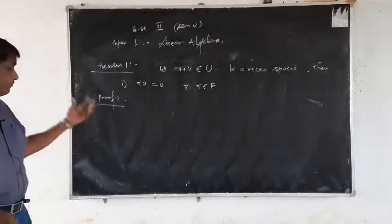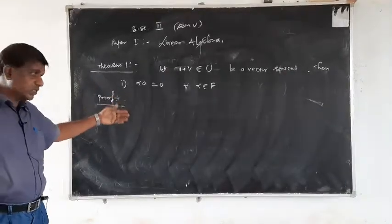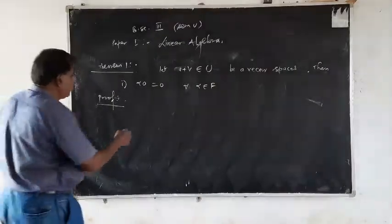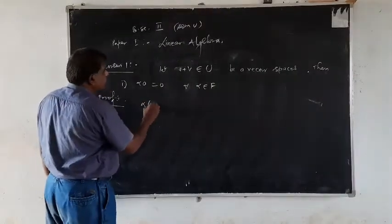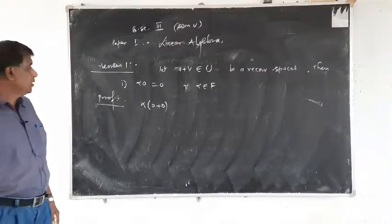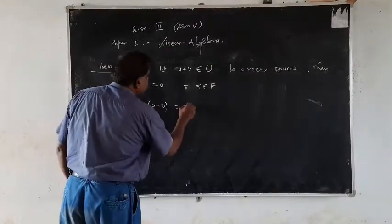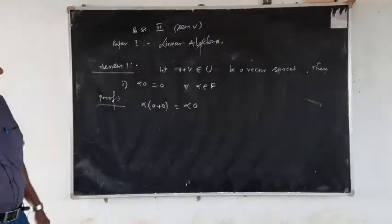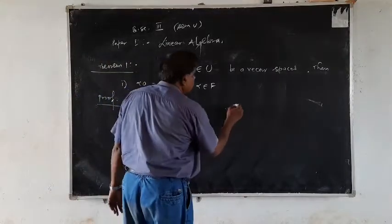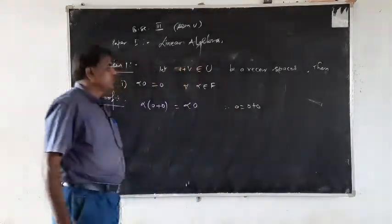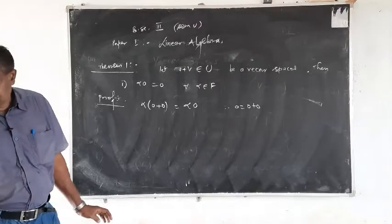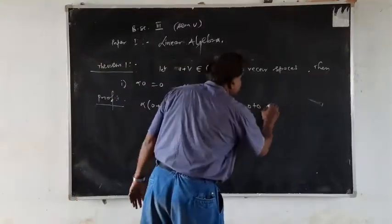We prove this theorem using the properties V1 through V4 written earlier. Since 0 = 0 + 0, we can write α·(0 + 0) = α·0. Now 0 + 0 also belongs to the vector space V.